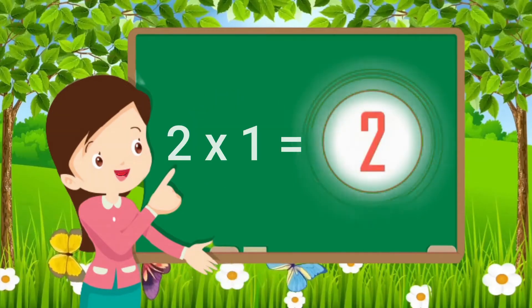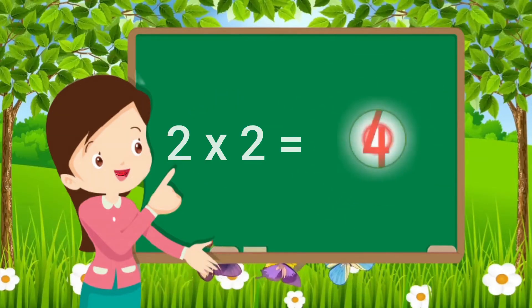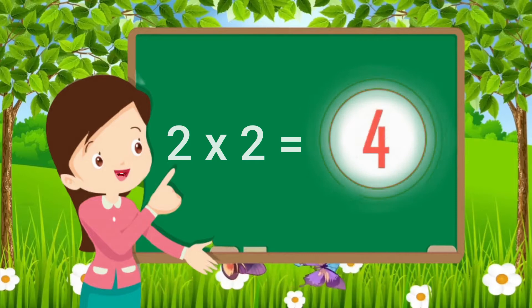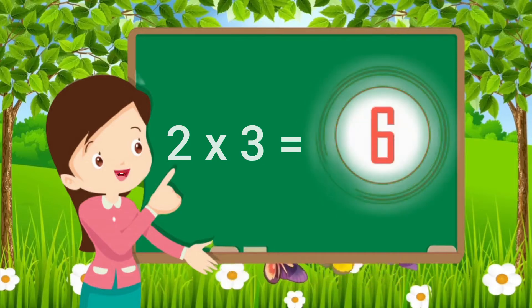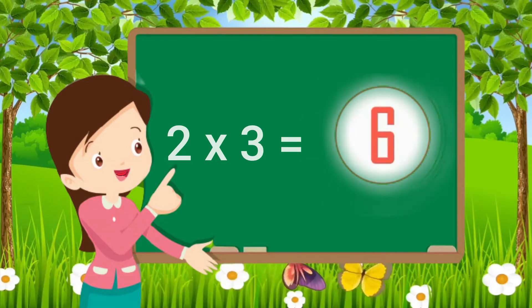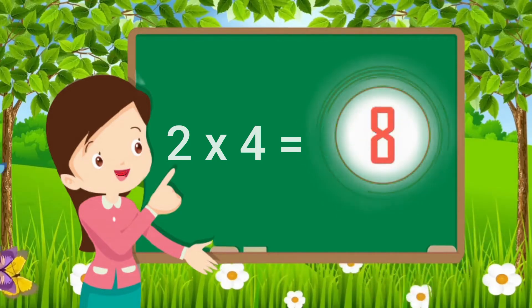Two ones are two. Two twos are four. Two threes are six. Two fours are eight.